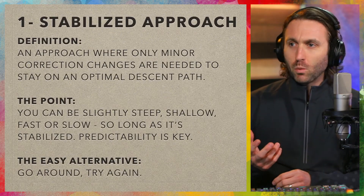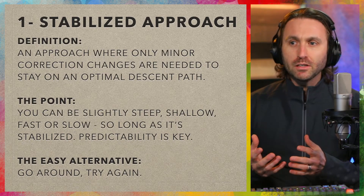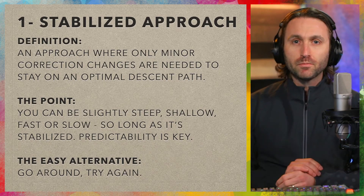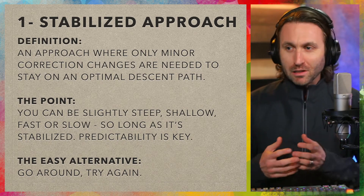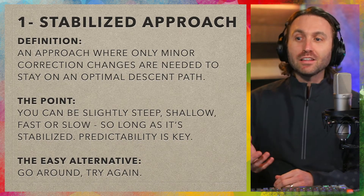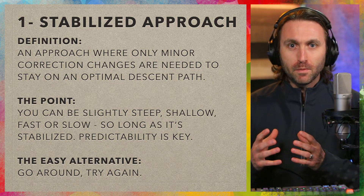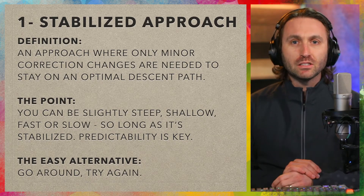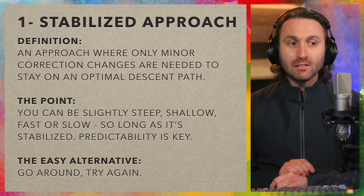Tip number one is to always have a stabilized approach. The definition of that for me is an approach where only minor correction changes are needed to stay on an optimal descent path. It's not like you're never going to be a little bit low or high or fast or maybe even slow. You can be slightly steep, shallow, fast, or slow, but so long as your overall approach and descent are stabilized and predictable — I think predictability is key — that is what determines a stabilized approach.